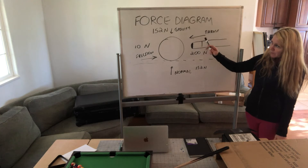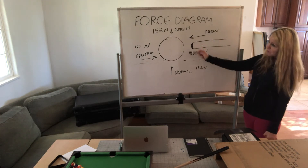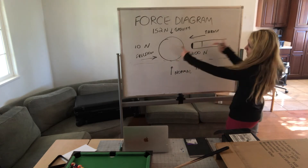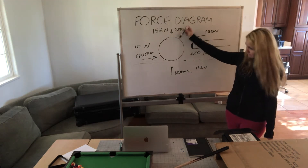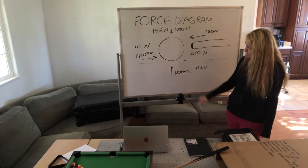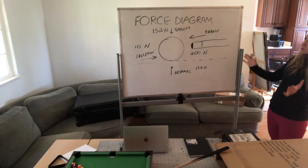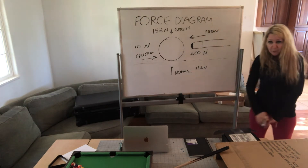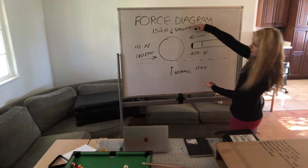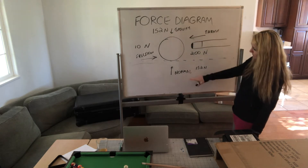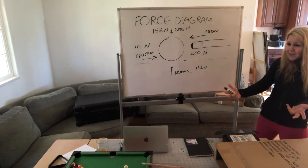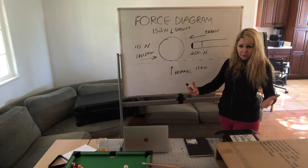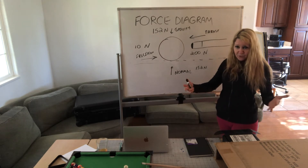On the force diagram, we have forces from all sides: thrust going one direction at 200 newtons, friction at 10 newtons going the opposite direction, a gravitational force of 152 newtons downward, and a normal force of 152 newtons upward. Looking at the gravitational force and the normal force — they are equal in magnitude.